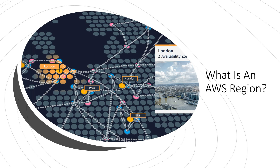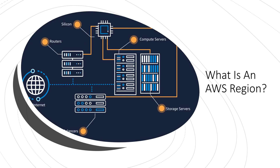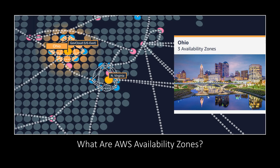AWS regions offer low latency, low packet loss, and high overall network quality. This is achieved with a fully redundant 100 GbE fiber network backbone, often providing many terabits of capacity between regions.